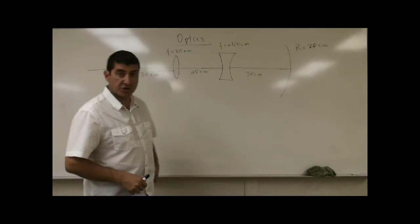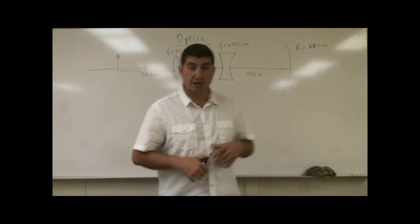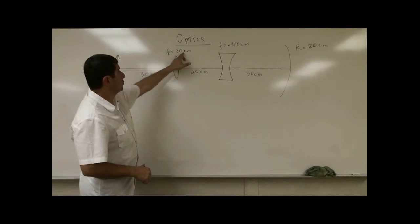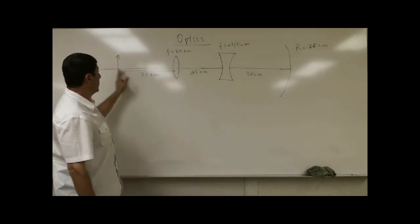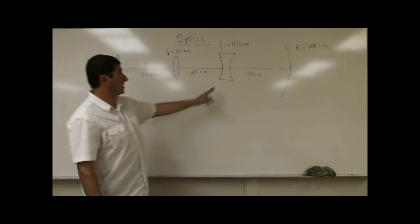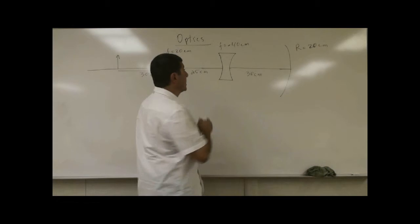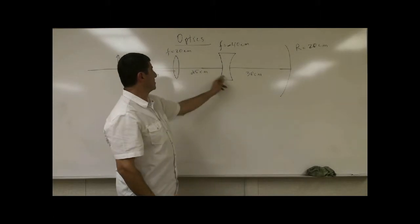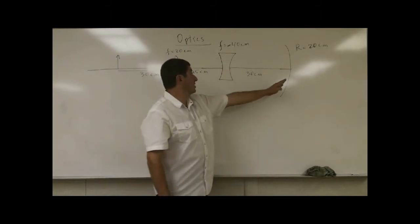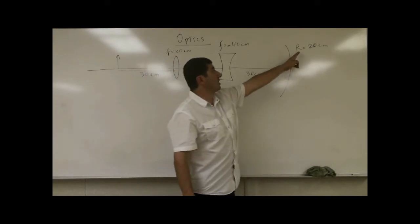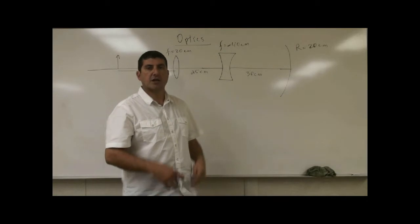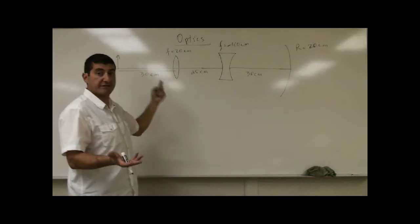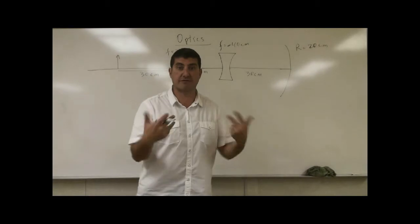Continuing from yesterday, we were doing multiple lens and mirror problems. Now I have one lens here — a converging lens with a focal length of 20 centimeters. There's an object 30 centimeters away from it, and then there's a diverging lens with a focal length of negative 40 centimeters. The distance between the two lenses is 25 centimeters, and to the right of the diverging lens there's a concave mirror with a radius of curvature of 20 centimeters. What I want to know is: where is the final image of this object, and what is the total magnification?